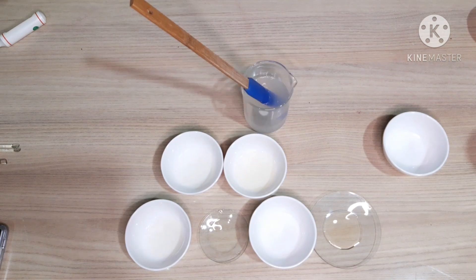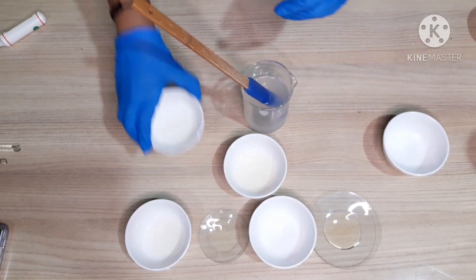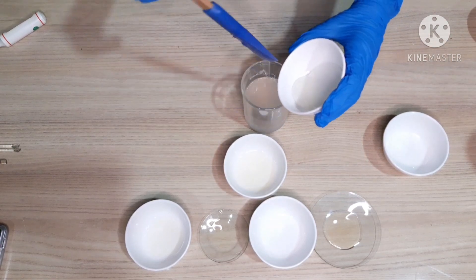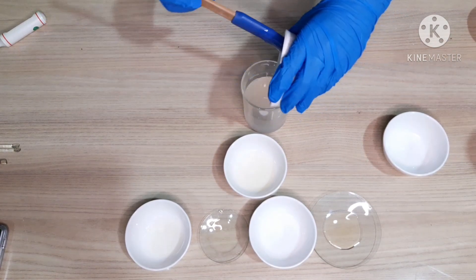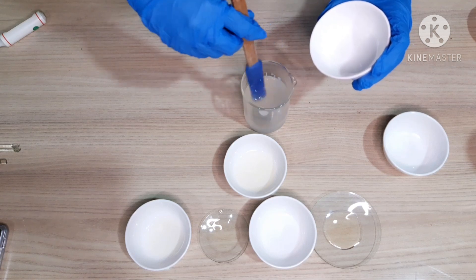Add sodium cocoyl glutamate and decile glucoside. You can see that viscosity is building up.